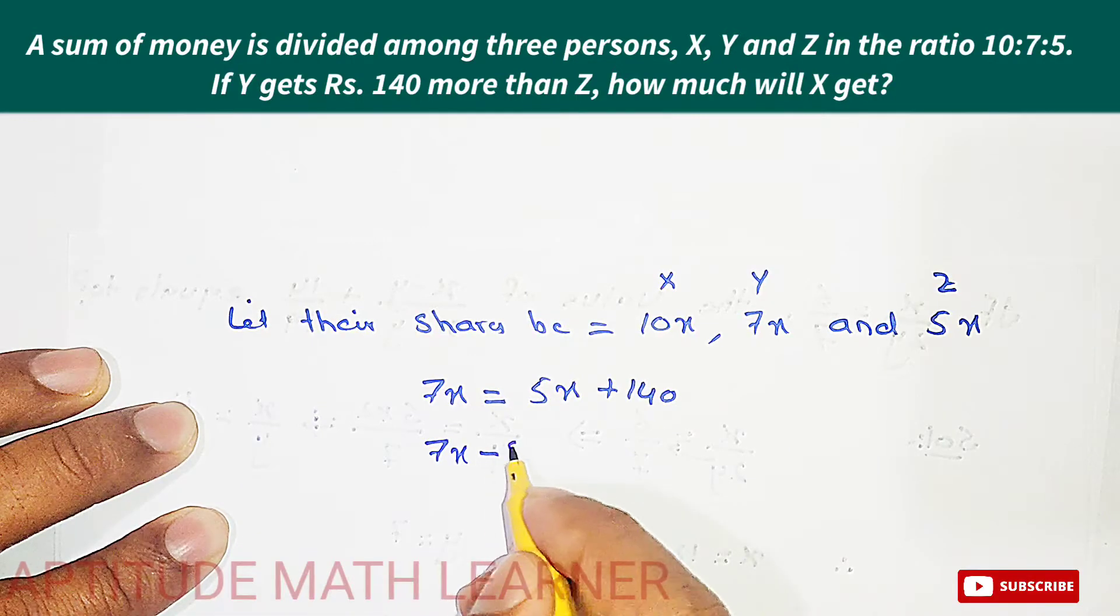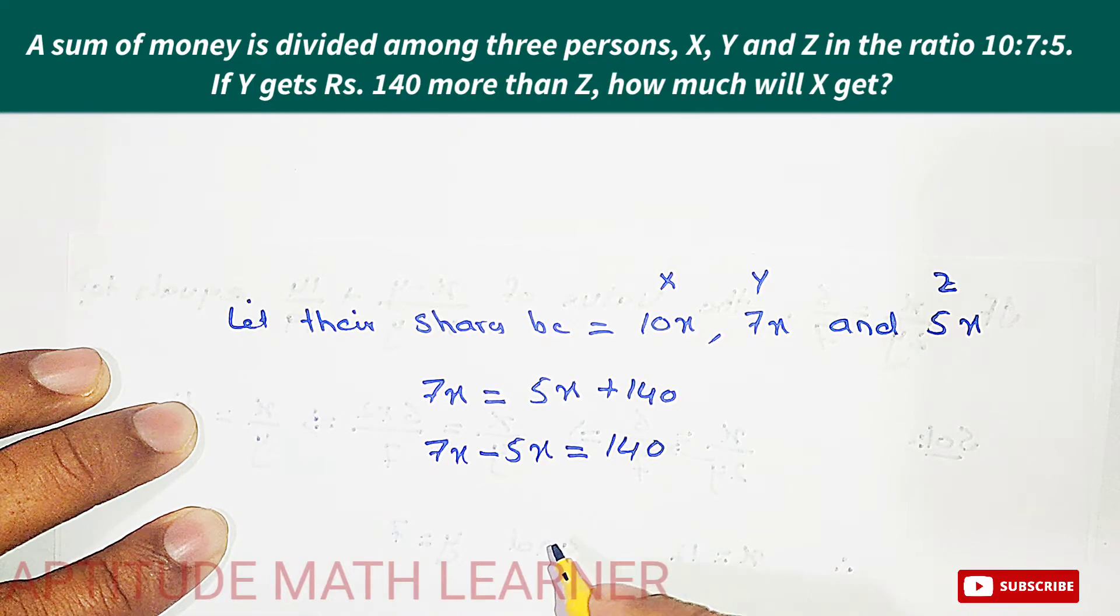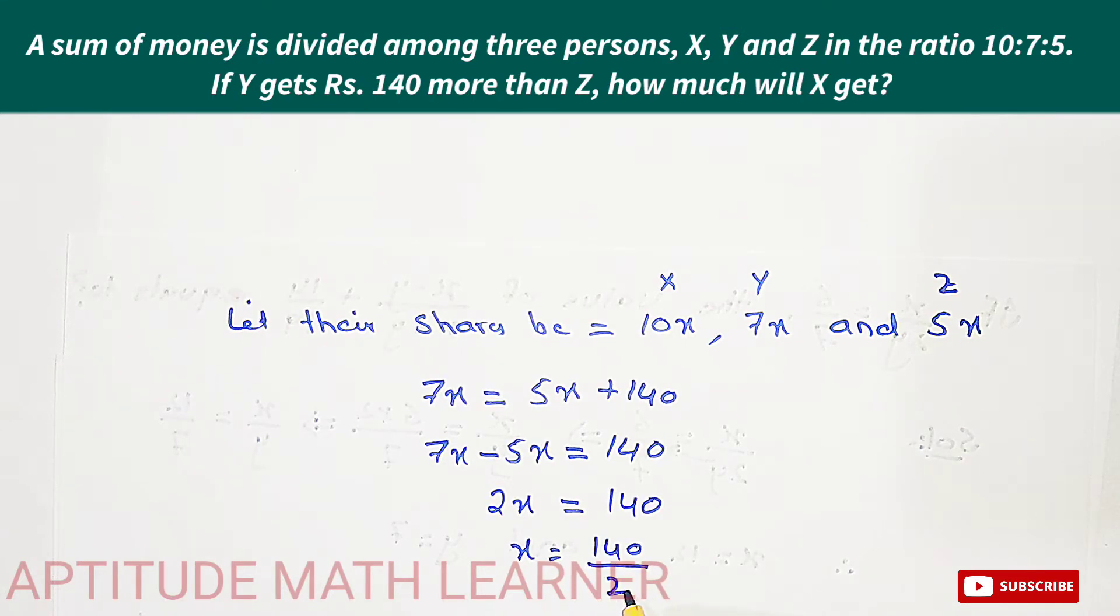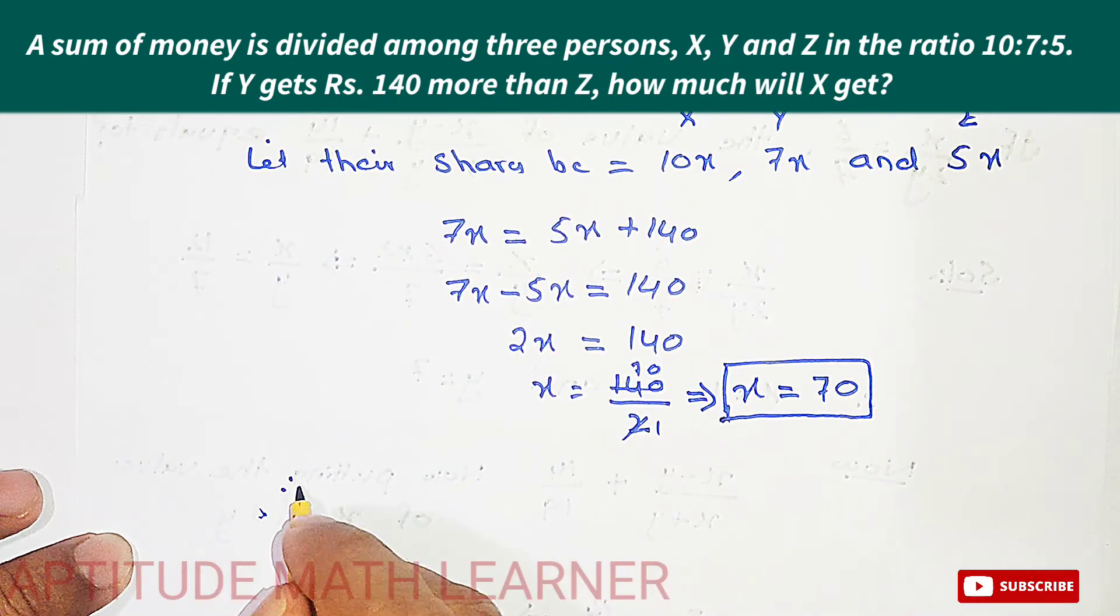So, 7x minus 5x equals 140. This becomes 2x equals 140. Therefore, x equals 140 divided by 2, which equals 70. So the value of x is 70.